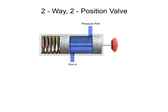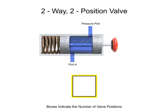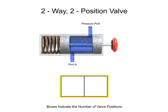To simplify fluid system drawings and schematics, all valves can be represented graphically. Boxes, sometimes called envelopes, are used to indicate the number of valve positions. Since this is a two-position valve, its graphic representation has two adjacent boxes. Continuous lines are used to indicate fluid flow between ports. For complex valves, the ports may also be labeled.